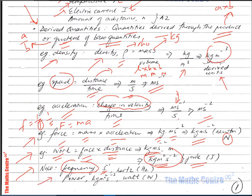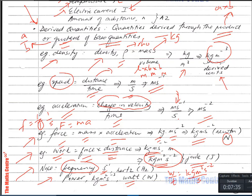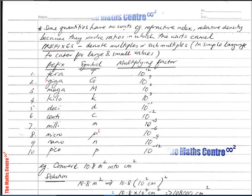Power is defined as the rate of doing work — work done per second. Work is in kilogram meter squared per second squared, and time is in seconds. Bringing the second up, we get kilogram meter squared per second cubed, and one kilogram meter squared per second cubed is one watt.